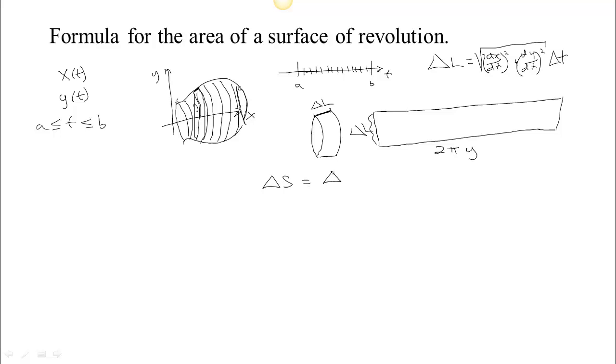is going to be delta l times 2 pi y. And if we put that together, delta s is going to be 2 pi y, y remember is a function of the parameter t from our parametrization up here, 2 pi y of t times the square root, times delta l, which is the square root of dx dt squared plus dy dt squared times delta t.